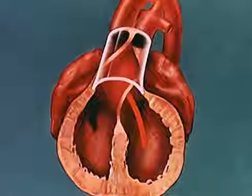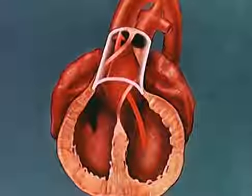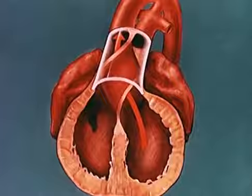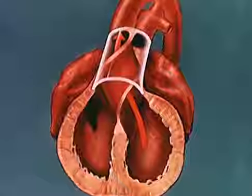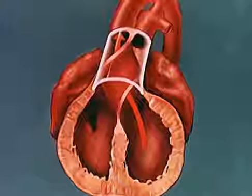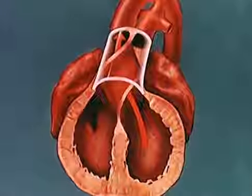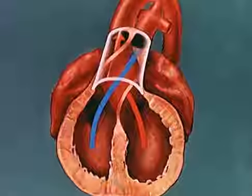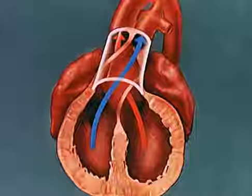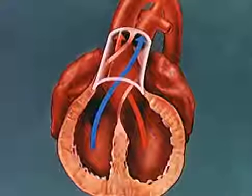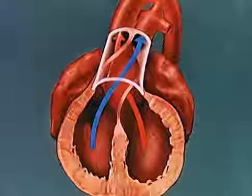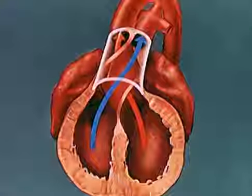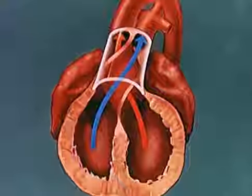Blood from the left ventricle enters the aorta, which passes to the right, behind the pulmonary artery. Blood from the right ventricle enters the pulmonary artery, which passes in front of the aorta, turning posteriorly on the left side of the mediastinum.